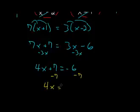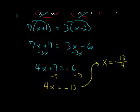So we have 4x is equal to minus 6 minus 7, which is minus 13, and that leads us to division by 4 on each side. So x is equal to minus 13 over 4.